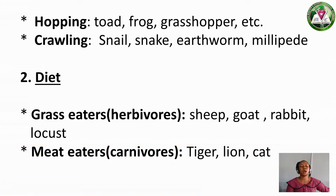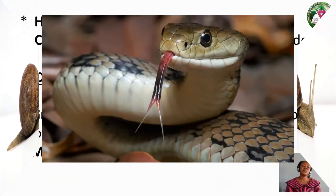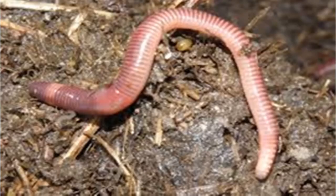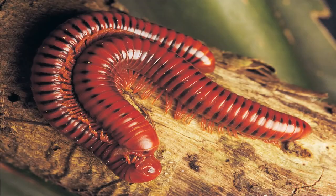Another movement type is Crawling. Let's know those that move by crawling. We have snail, earthworm, millipede, and so on.